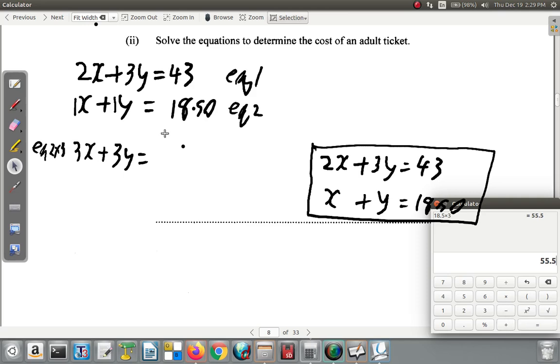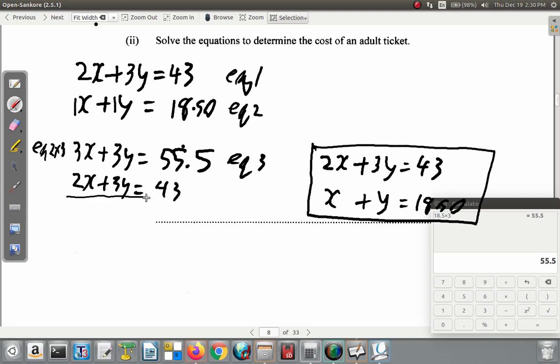18.5 multiplied by 3 will give 55.5. So let's have here 55.5. This is an equation. Let's call this equation 3. Now, let's put back equation 1. 2X plus 3Y is equal to 43.